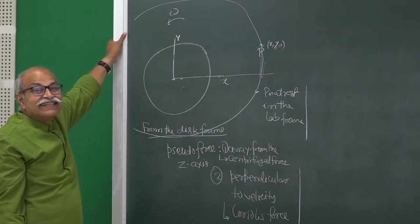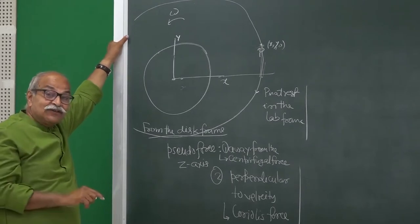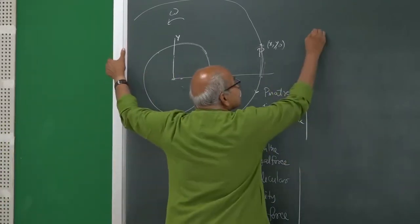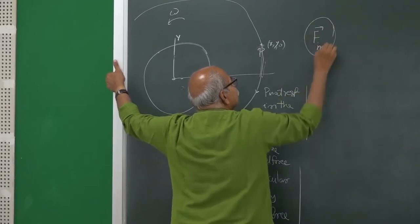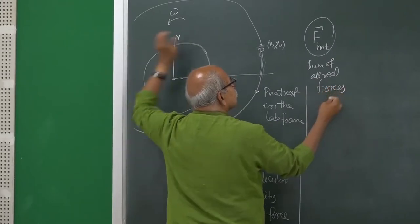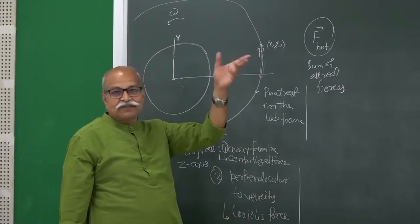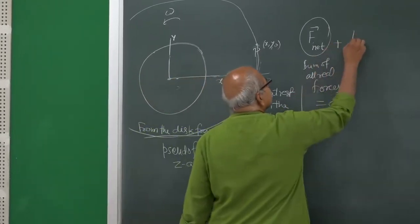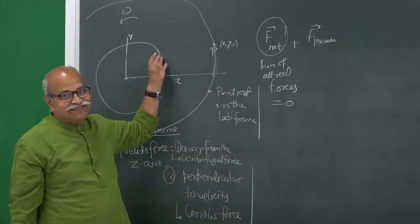If it is going in a circular path, there is an acceleration. In the disk frame, if I want to use Newton's second law, there is an acceleration. I have to assume some pseudo forces. The sum of all real forces — gravity mg and normal force — all add to zero. But then I have to supply pseudo forces so that I get this acceleration using Newton's second law.